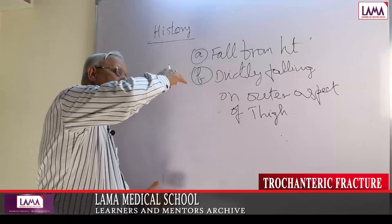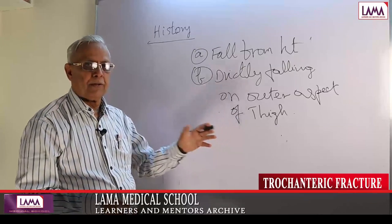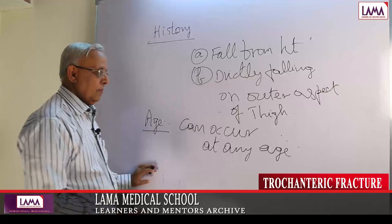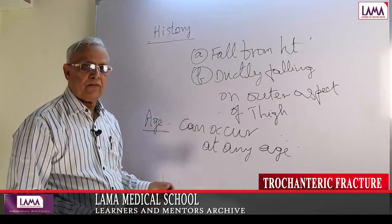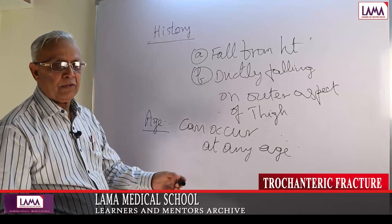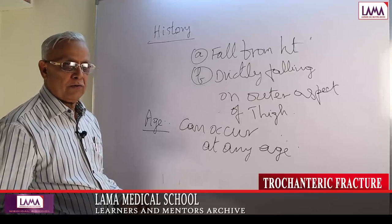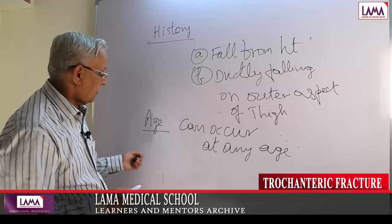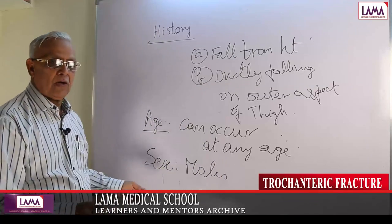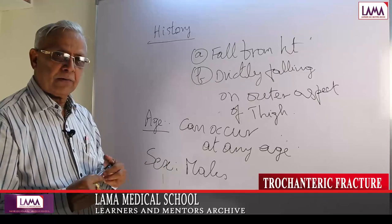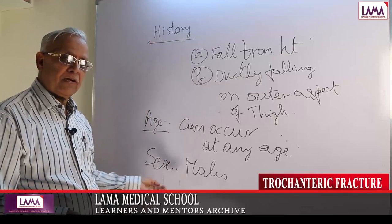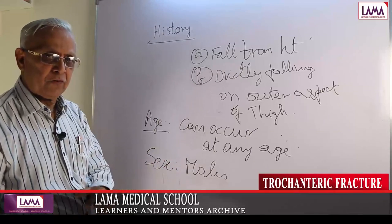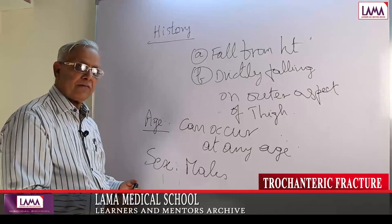If somebody falls and lands on the side, directly on the trochanter, this fracture can occur. Regarding age: fracture neck of femur occurs in elderly people, but trochanter fracture can occur at any age starting from adolescence — it is not common in children. It is more so in adults up to old age. Fracture neck of femur is more common in elderly osteoporotic patients. Regarding sex: males have more preponderance because most people working at heights and doing vigorous manual labour are male, though it is not uncommon in females.